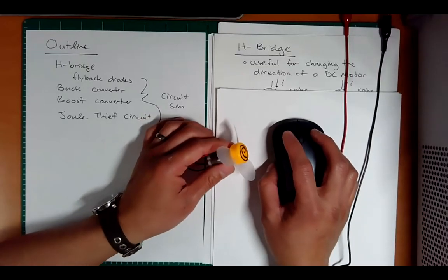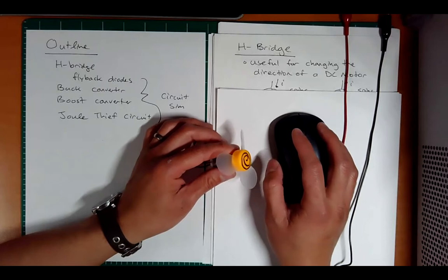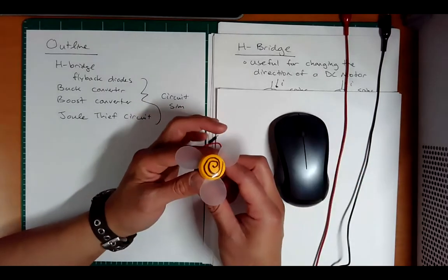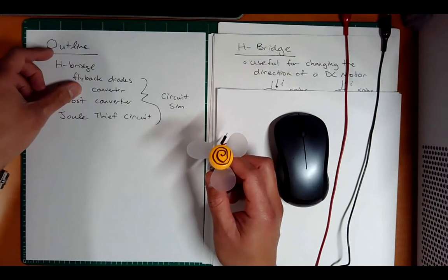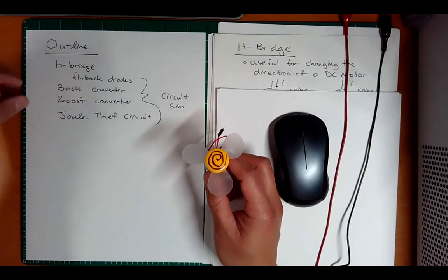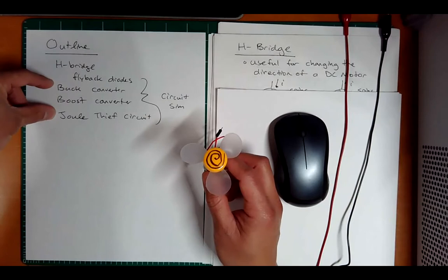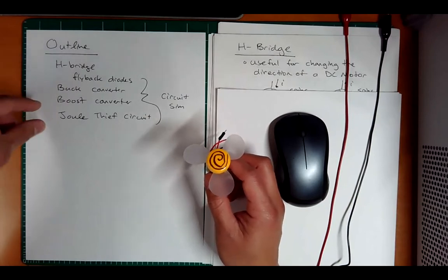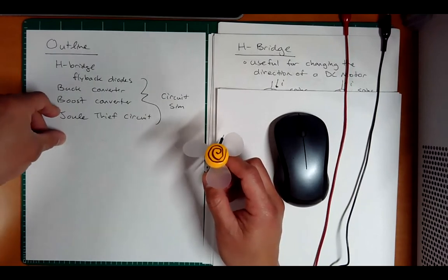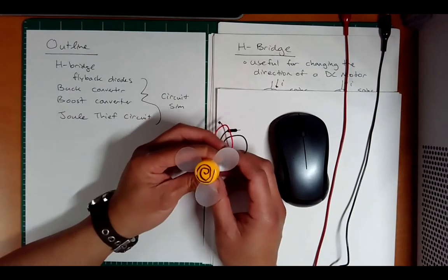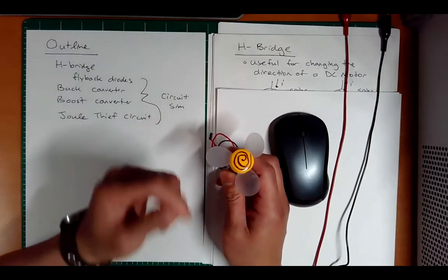Hi, this is ET370, Lecture 6, or actually 6A. This is going to be a three-part lecture. In the first part, we'll talk about H-bridge, the H-bridge circuit and flyback diodes. Then we'll talk about buck and boost converters, which can step up and step down DC voltage. And last, we'll go over this joule-thief circuit. But first, we're going to talk about H-bridges.